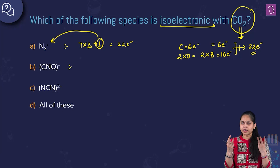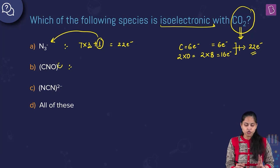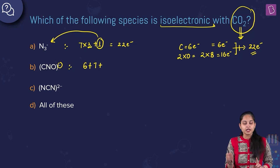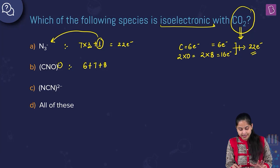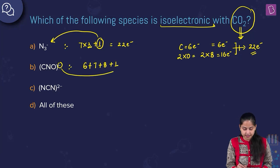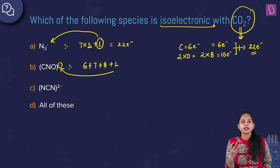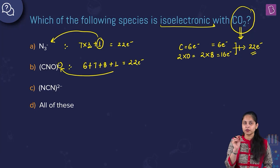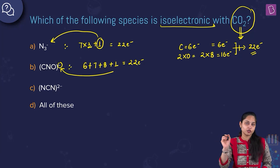For the CNO⁻ ion, we have carbon (6 electrons), nitrogen (7 electrons), and oxygen (8 electrons), plus 1 for the negative charge: 6 + 7 + 8 + 1 = 22 electrons. So CNO⁻ is also isoelectronic with carbon dioxide.